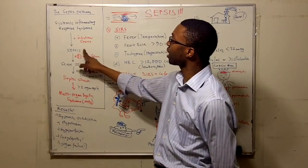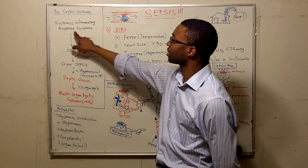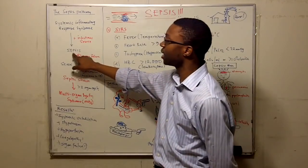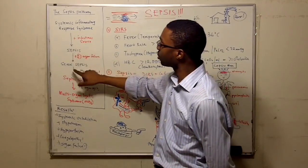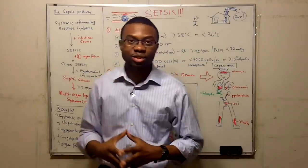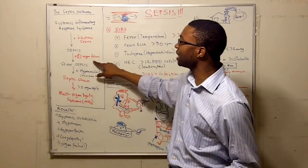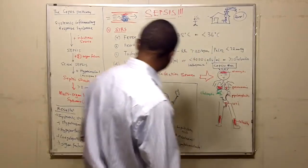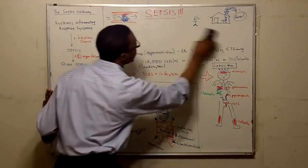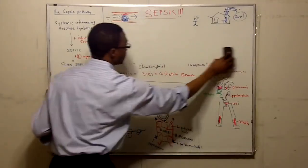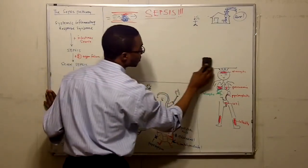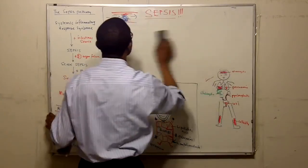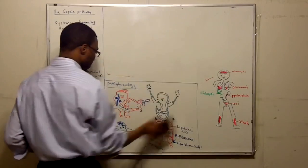Now let's come back to our sepsis pathway. We said SIRS plus infection source. We know where the infection is, if it's in the lung. It's sepsis. Now to develop severe sepsis, you have to have at least one organ failure. Let's find out which organ.